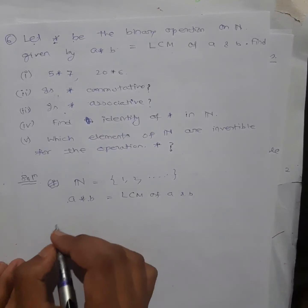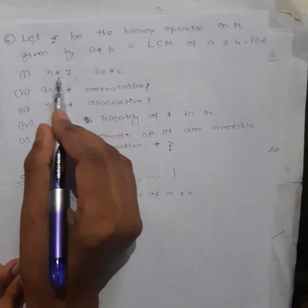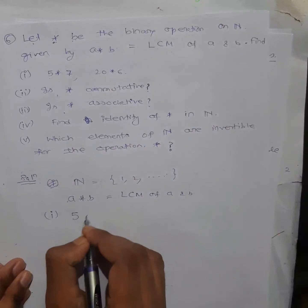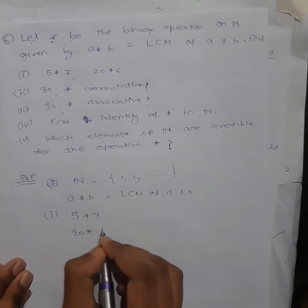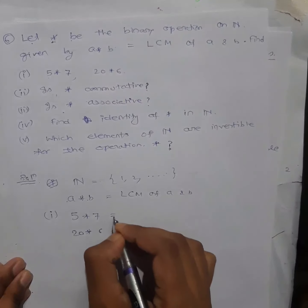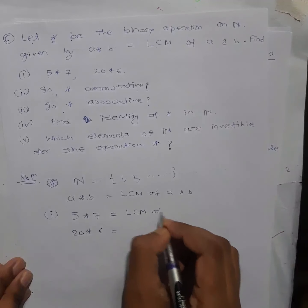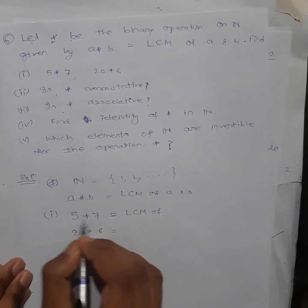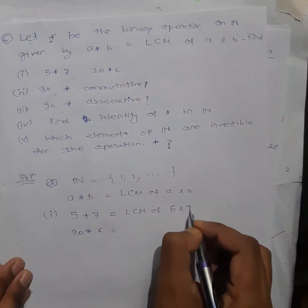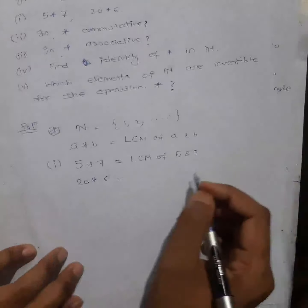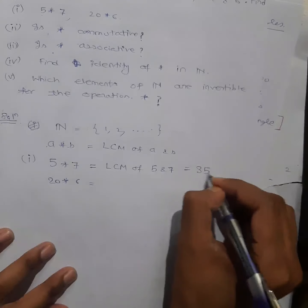Try to understand this question carefully. Question number 1: find 5★7 and 20★6. So 5★7 means the operation is LCM — LCM of 5 and 7. LCM of 5 and 7 is 35.